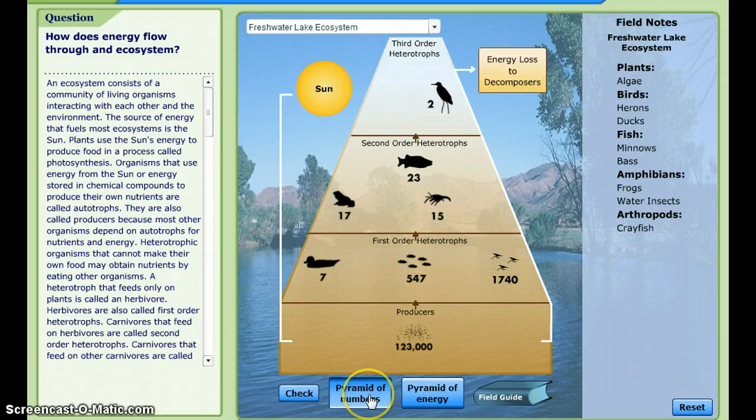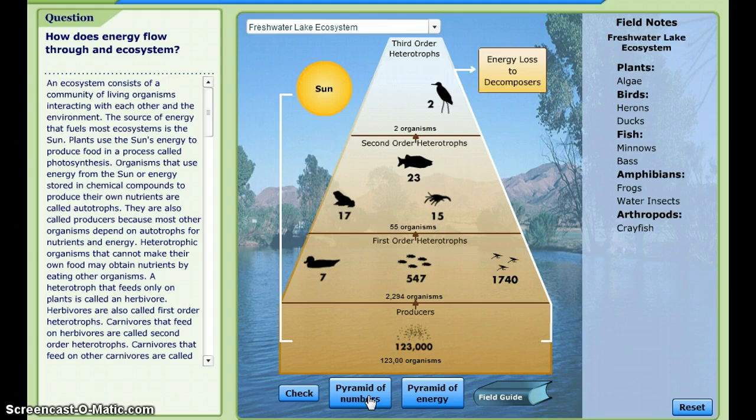Once they have the correct placement, they click on Pyramid of Numbers, which gives them the population totals, and add that to their notes.